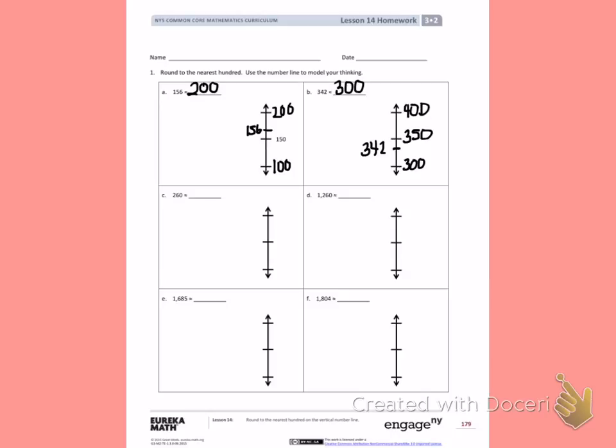Letter D. Now we have 1260. Again, we're still rounding to the hundreds. So we're going to make our hundreds 1,200 and 1,300. Our halfway number would be 1,250. 1,260 would fit above 1,250, which means I would round that number up to 1,300.